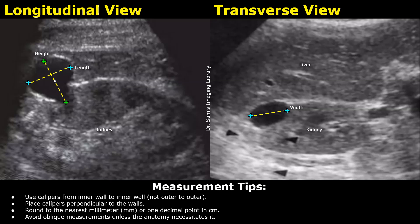This is a renal cyst. The first image is in the longitudinal plane. This is the kidney, and this is the renal cyst. To measure the length, place the calipers on the inner walls of the superior and inferior aspects of the cyst. Try to keep the calipers perpendicular to the walls. Similarly, take the anteroposterior measurement by placing the calipers perpendicular to the walls to get the height.